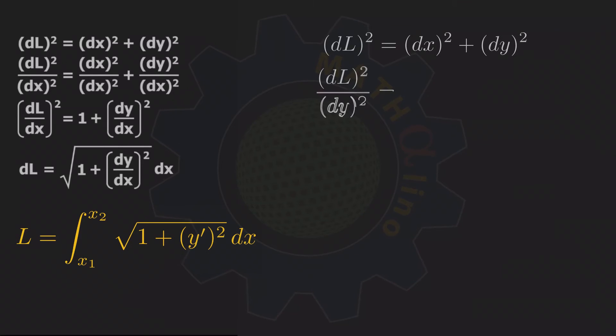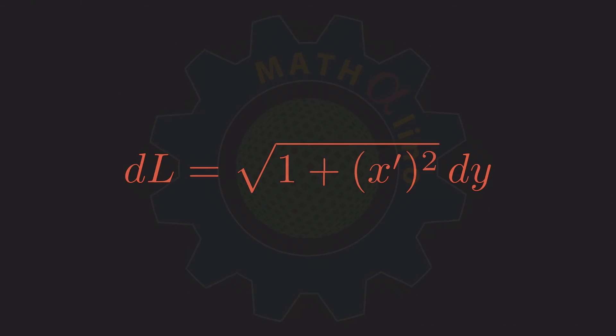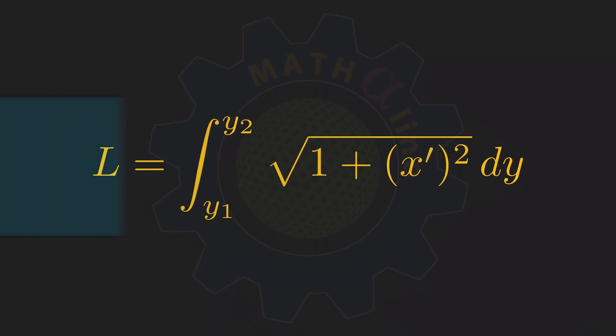If from our Pythagorean theorem, you happen to divide both sides by dy squared instead of dx squared, we will arrive to this definition of differential length of arc, where the dy and dx change in position. We can then call dx over dy as x prime to lessen the burden of writing. Integrate both sides, and we have this formula. Observe that our limits now start from y1 to y2. It is because we are integrating in terms of the differential element dy.